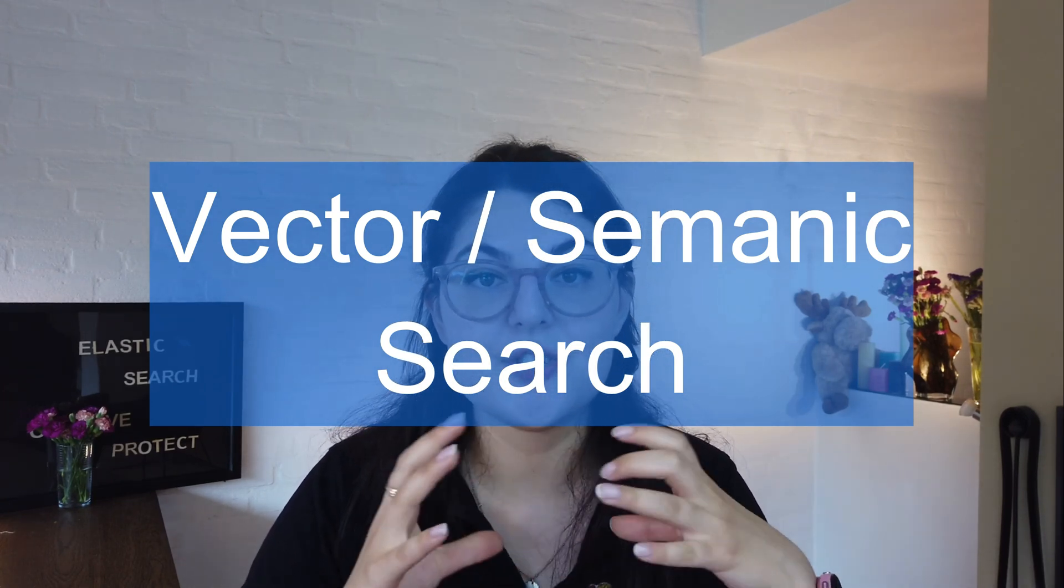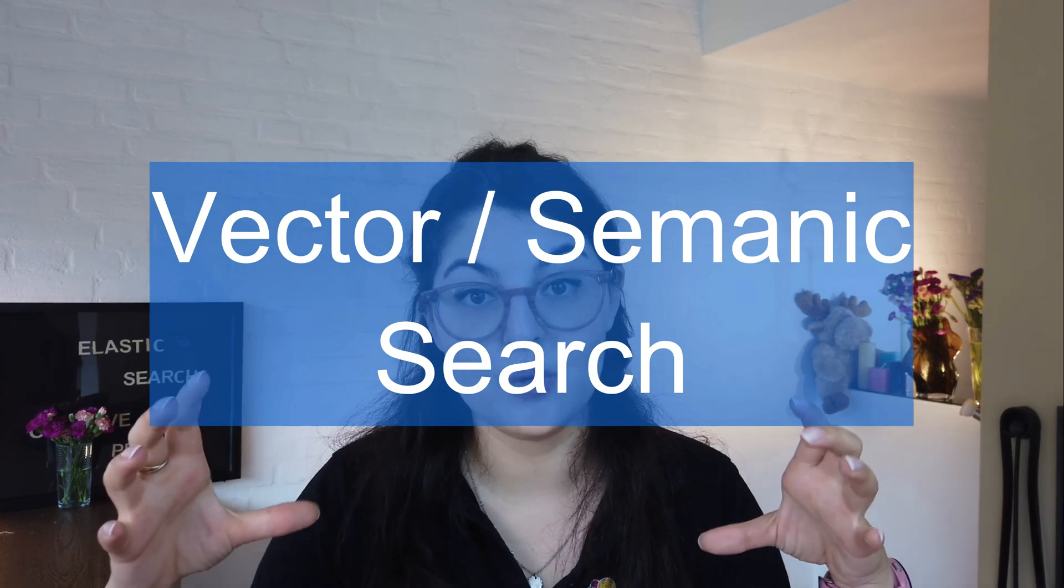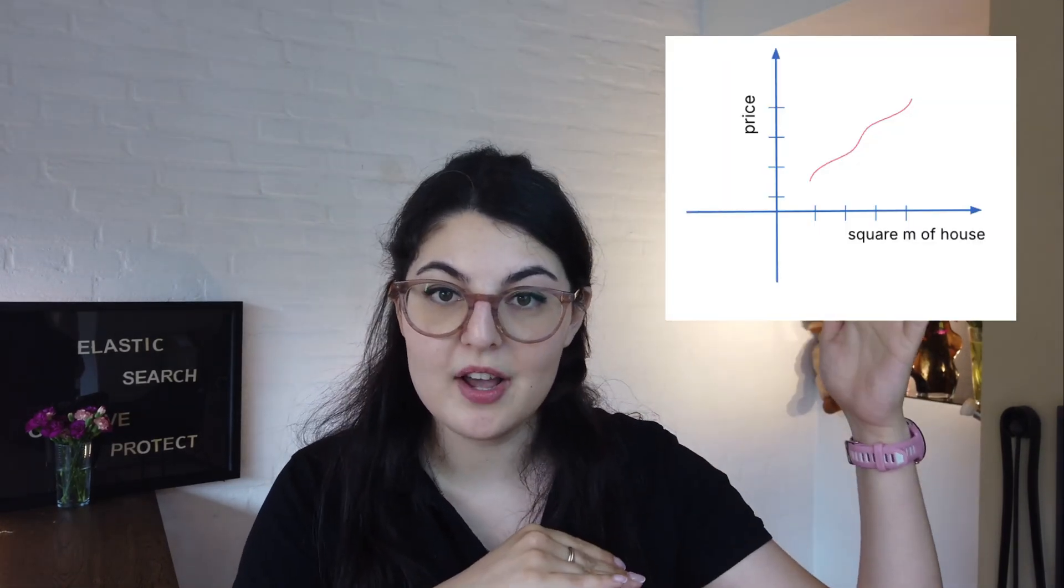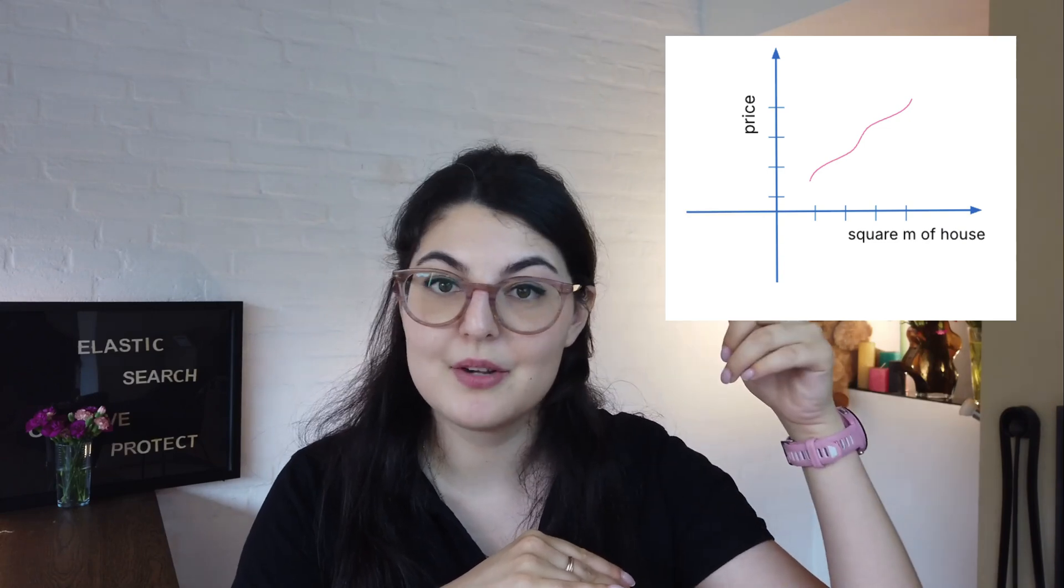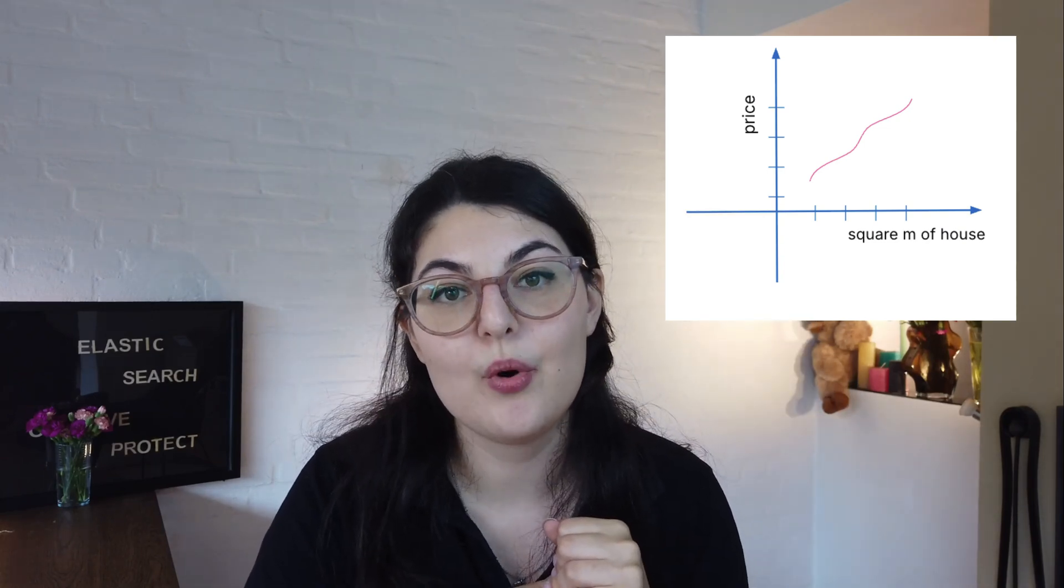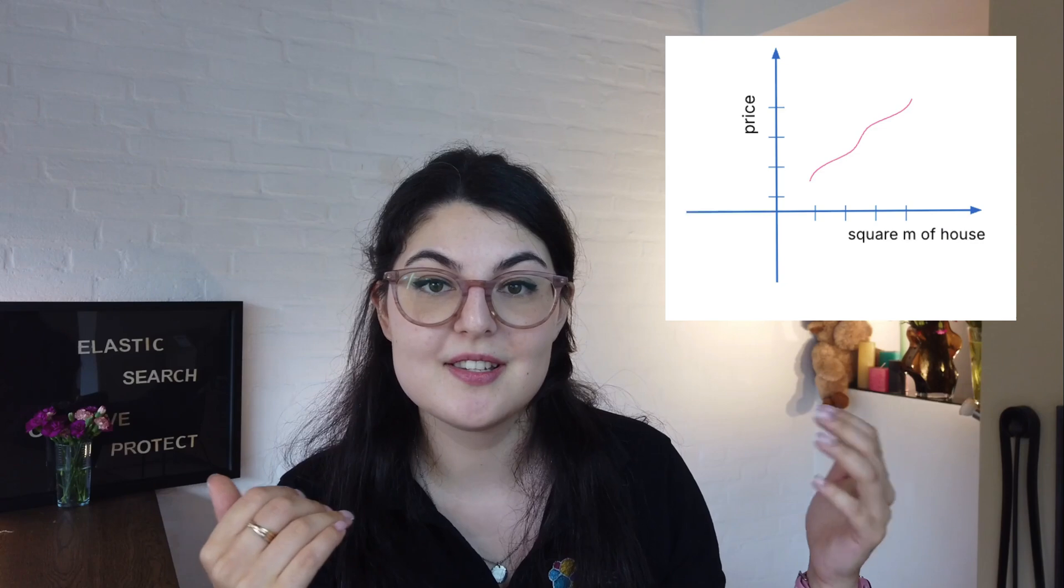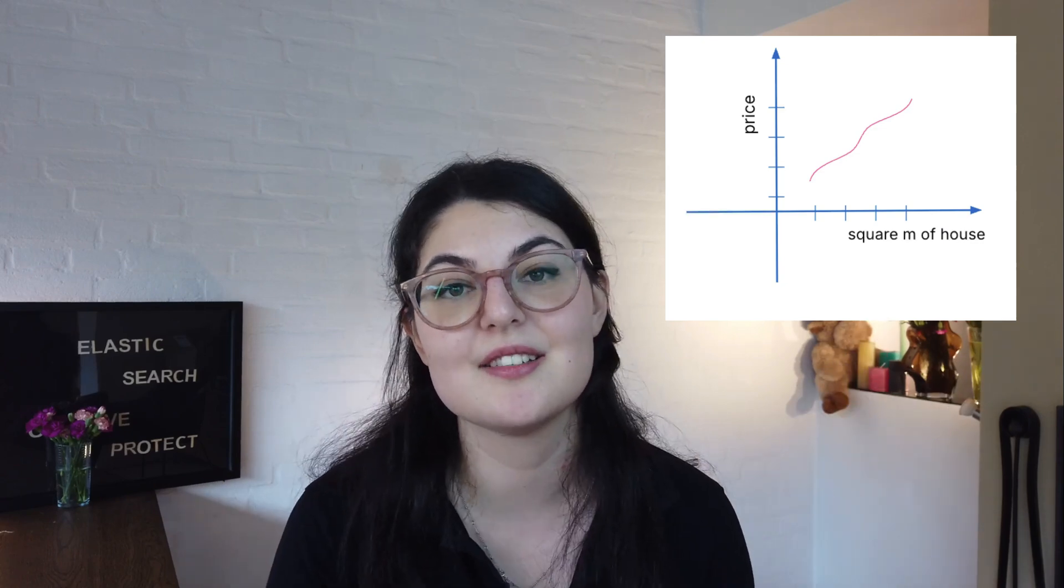There are techniques to turn natural language into numbers, and most of the time those numbers are vectors, something that you probably remember from school. We would have the X and Y axes, and we have a 2D point such as house prices and square meters, a classic example.